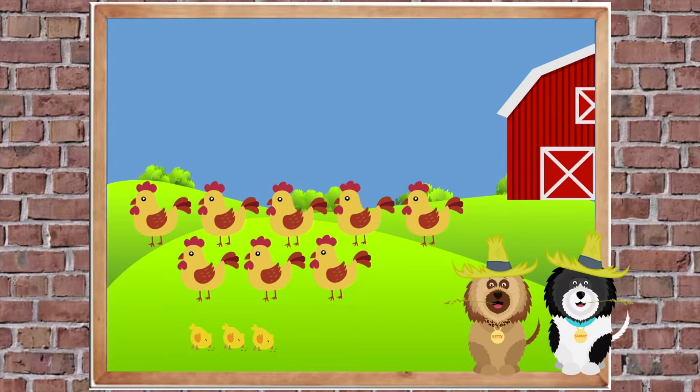Betty and Barney went to the farm this week. They love to see all of the different animals. What animals can you see in the picture? Yeah, there's chickens and some chicks. How many chicks are there? Right, let's count them. There's one, two, three. And how many chickens are there? Can you count them?